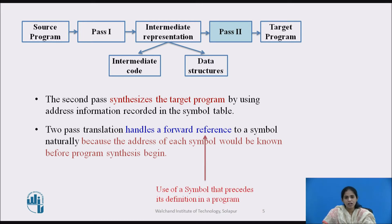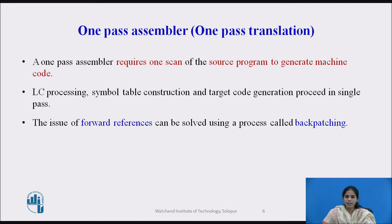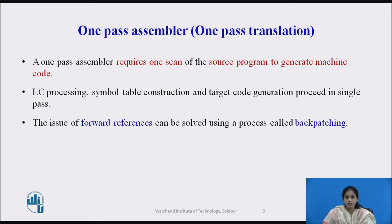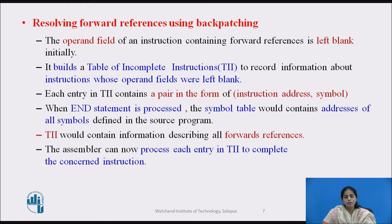Forward reference is nothing but the use of a symbol that precedes its definition in the program. Next, we see the one-pass assembler, also called one-pass translation. A one-pass assembler requires one scan of the source program to generate the machine code. Location counter processing, symbol table construction, and target code generation are all processed in a single pass. However, the issue of forward reference cannot be handled properly in one-pass assembler, so it is solved using a process called backpatching.